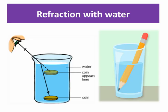When a ray of light passes from a rarer medium such as air to a denser medium such as water, it bends towards the normal. When it passes from a denser medium such as water to a rarer medium such as air, it bends away from the normal.